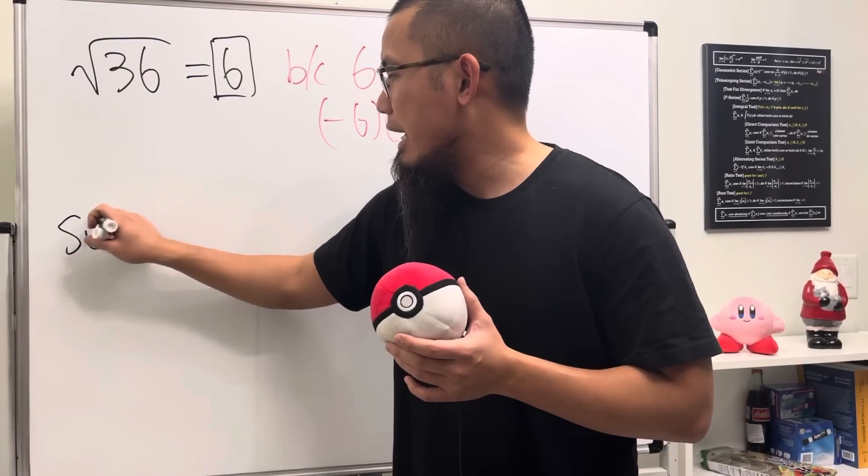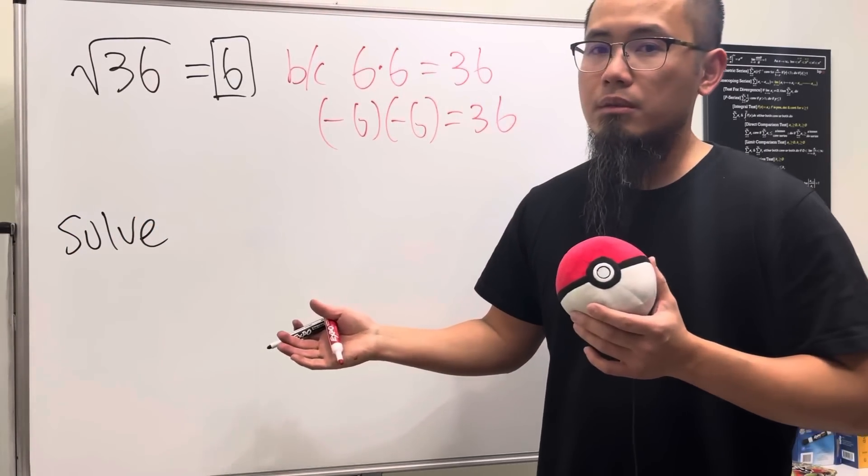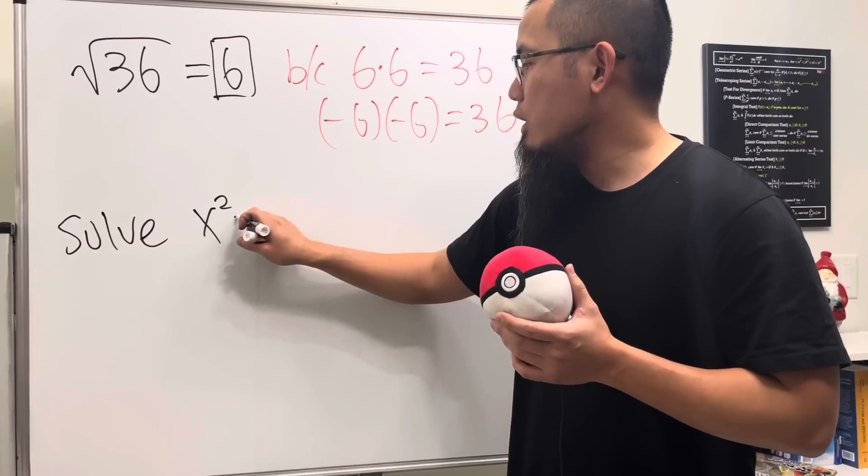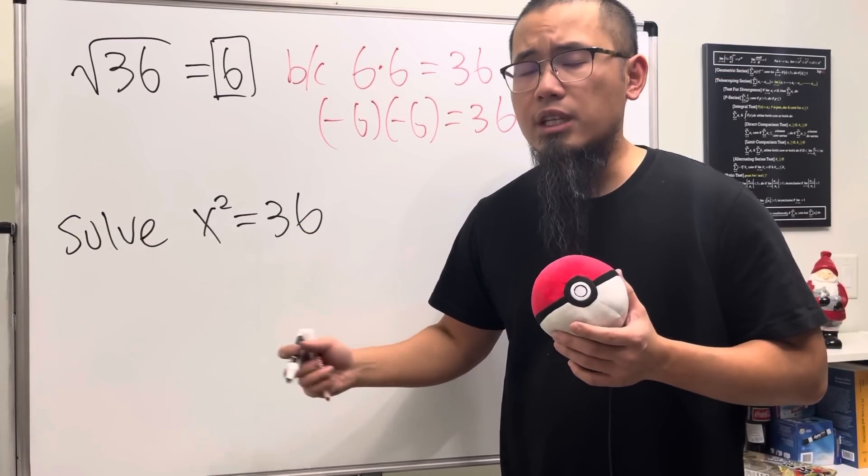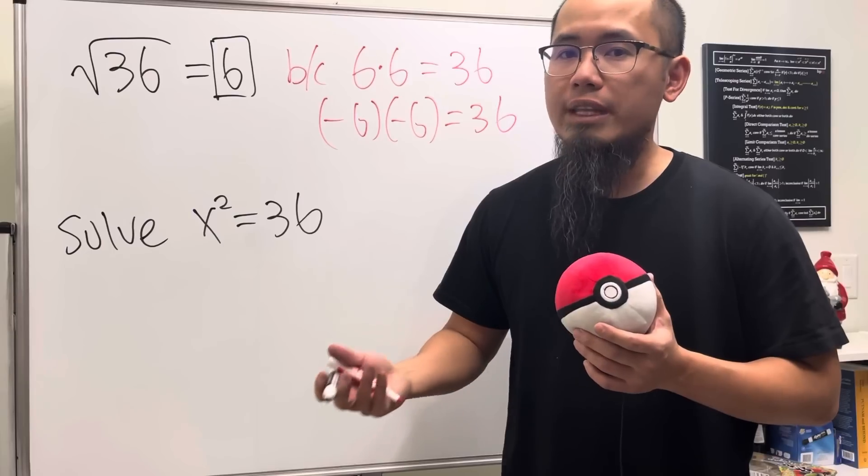However, if you are looking at solving an equation, x squared equals 36. When we are solving equations, we can possibly have more than one answer.